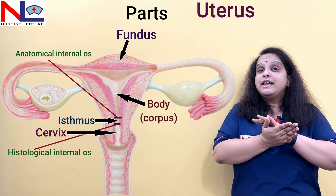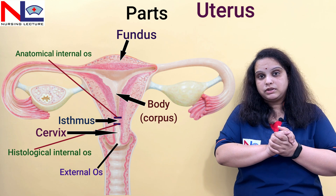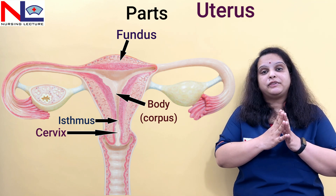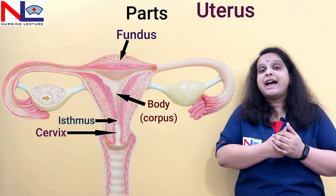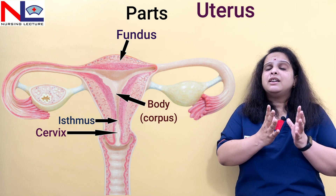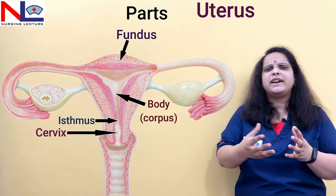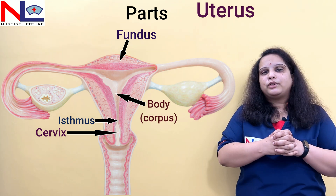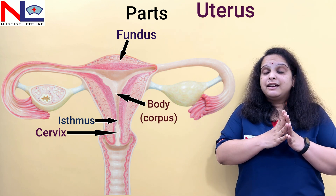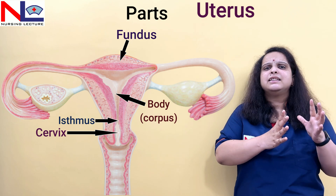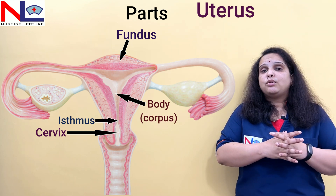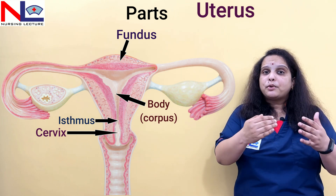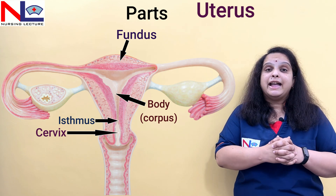The cervical part extends from the histological internal os to the external os. The secretion of the uterus from the endometrial gland is usually thin and watery, but the secretion from the cervical region is quite thick and alkaline in nature, rich in fructose and mucopolysaccharides. These provide nourishment to the sperms to reach up to the fallopian tube and also protect the uterine cavity from bacteria entering during pregnancy, giving a bactericidal effect. During pregnancy, the cervical mucus forms a thick plug in the cervical canal, protecting the cavity from being infected by any pathogen.